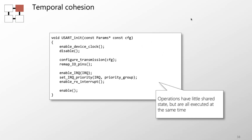Temporal cohesion is where operations in a module have very little shared state but all happen at the same time. The poster child is startup or init routines — a collection of unrelated functions that just happen to be called all at once. We can think of temporally cohesive functions as controlling functions whose purpose is to schedule and sequence things. Not great, but still better than having them distributed randomly across the system.